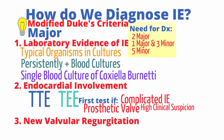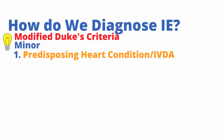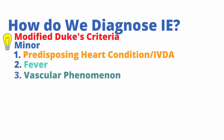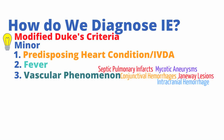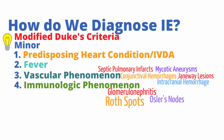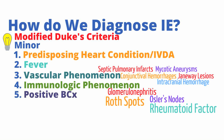Now let's move on to the minor criteria. These include having a heart abnormality predisposing you to infective endocarditis such as a congenital heart defect, intravenous drug abuse, and fever. Vascular phenomena are also minor criteria and include conjunctival hemorrhages, septic pulmonary infarcts, mycotic aneurysms, Janeway lesions, and intracranial hemorrhages. Mycotic aneurysms form because infective endocarditis affects vessel walls — infection of the entire wall weakens it, allowing an aneurysm to form. The fourth minor criterion is immunologic phenomena such as glomerulonephritis, Osler's nodes, Roth spots, and rheumatoid factor. Finally, a single blood culture positive for an organism typical of endocarditis that does not meet major criteria is the last minor criterion.